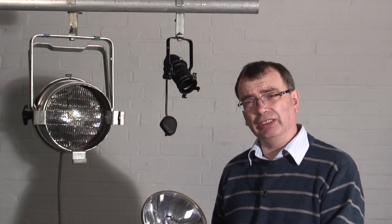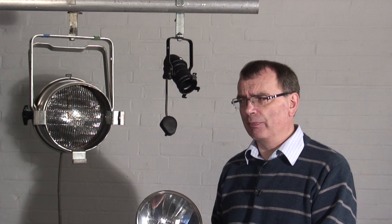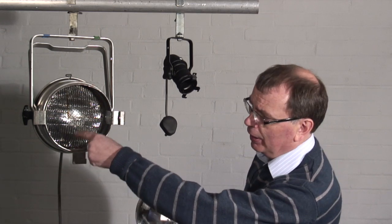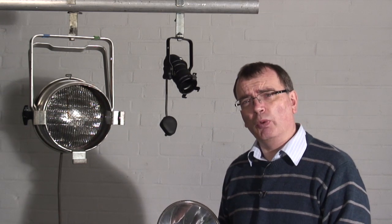So you notice this one's got a clear lens—this is a narrow-angled lamp. The one we have in here has got a fluted lens, so that's a wide-angled lamp.